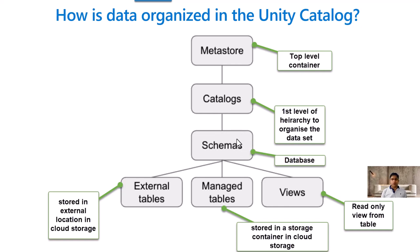The third level is Schemas — a schema is nothing but a typical schema used in a database. The database contains different sets of objects like views and tables. There are two types of tables: external tables and managed tables. External tables are stored in an external location in cloud storage, while managed tables are stored inside a container created in the cloud storage. Read-only views are created from the tables. This is how the overall structure works in Unity Catalog.